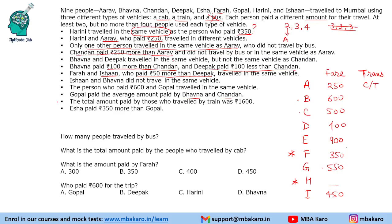Next, Chandan did not travel by bus or in the same vehicle as Arav. So Chandan will travel by cab or train — whichever Arav is not in. If we know one of those vehicles, we will know the other.